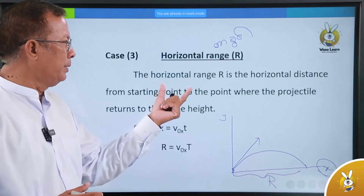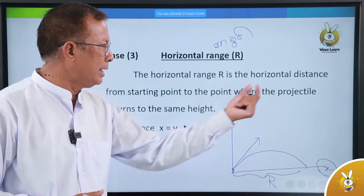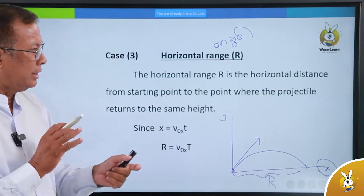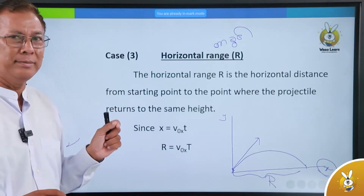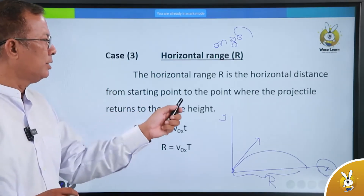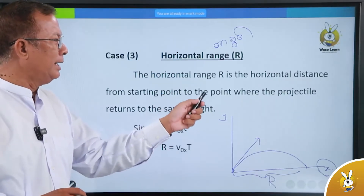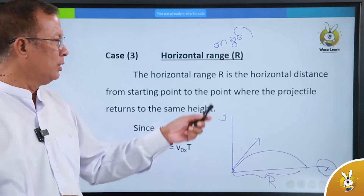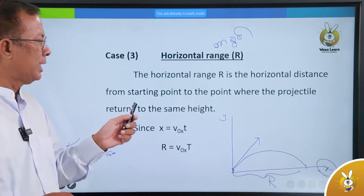Horizontal range — horizontal distance from starting point to the point. When the projectile returns to the same height.